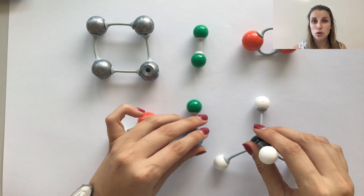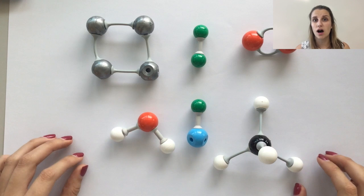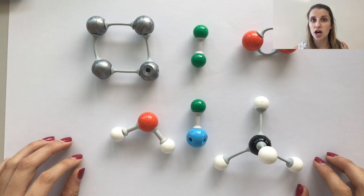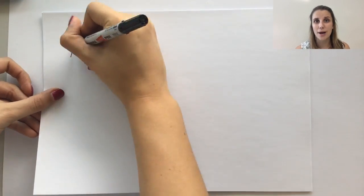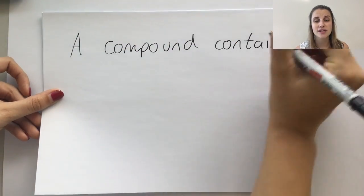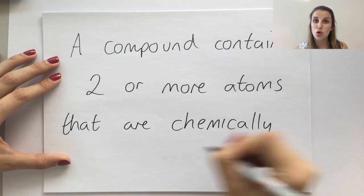The question you might be asking now is what do we call the three at the bottom? The top three are elements, they contain one type of atom. The bottom three contain two or more types of atoms. They have different colored molymod balls. We call these compounds, and compounds have to be chemically combined and contain two or more atoms.